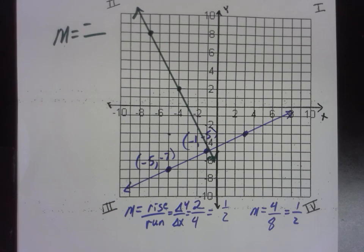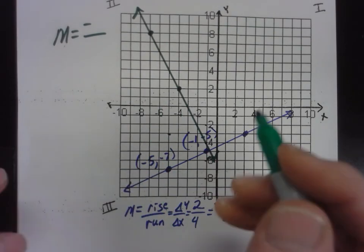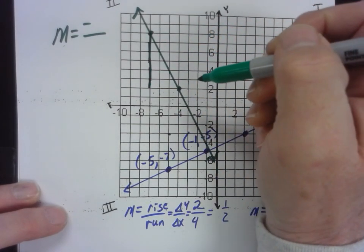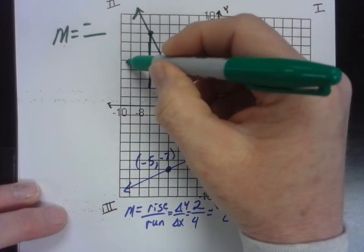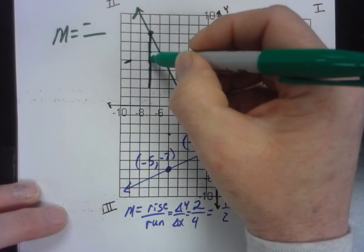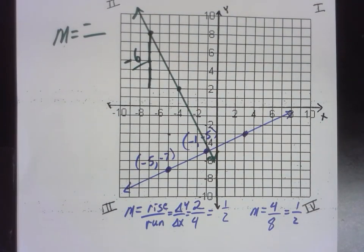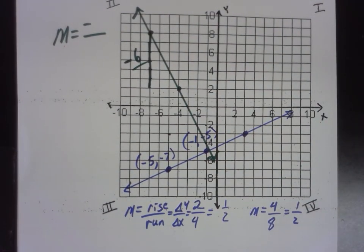And then we just start looking at the rise and the run. Now in this case, the rise is a little weird. It's negative one, two, three, four, five, six. Is that weird to say that the rise is negative six? That's down six, right? So usually before my class, rise for you guys was always up, right?